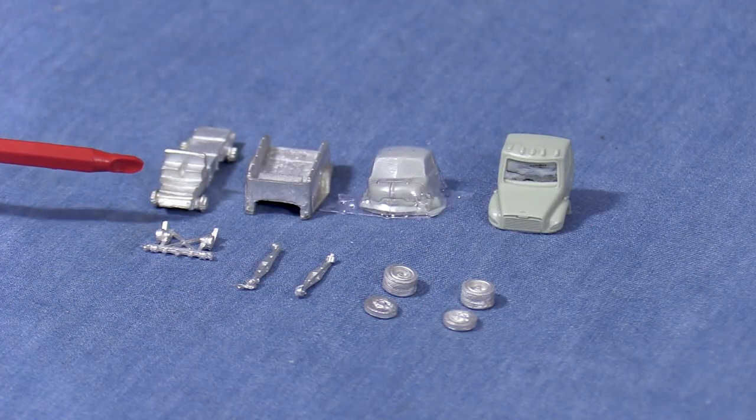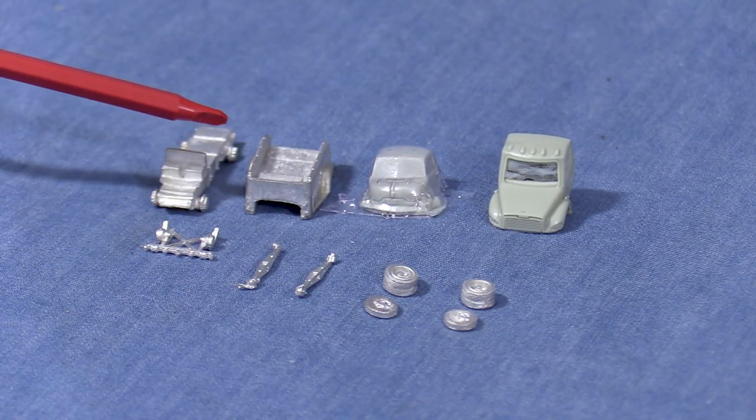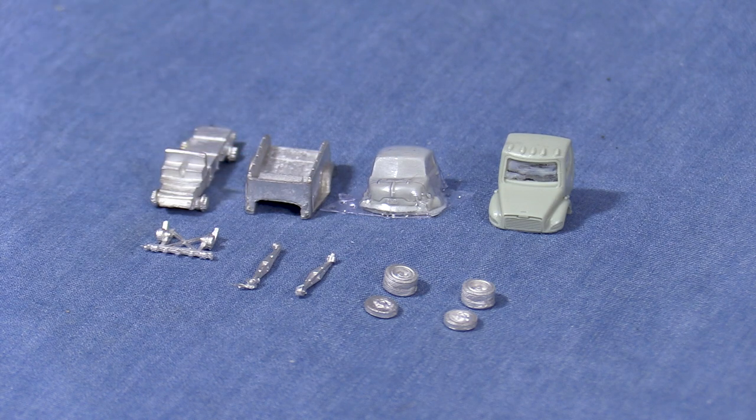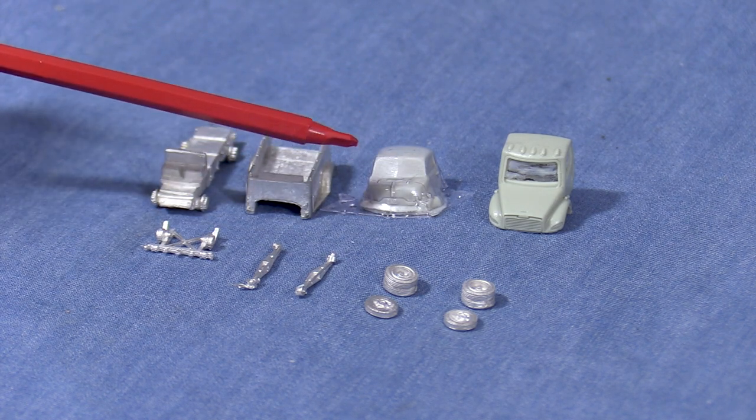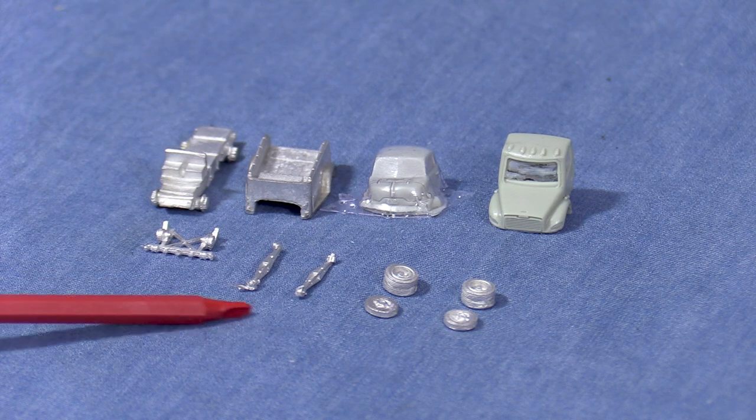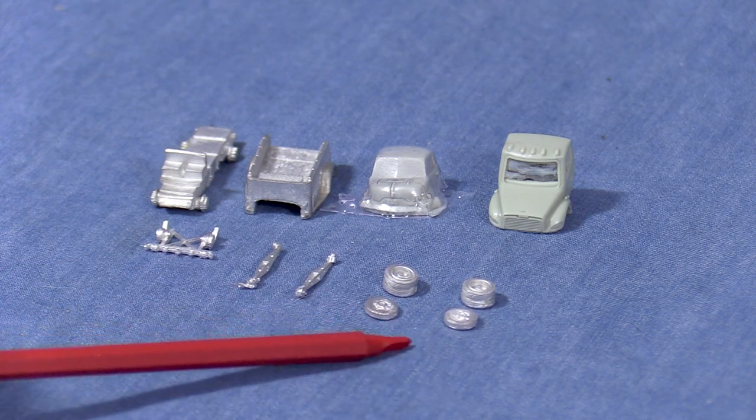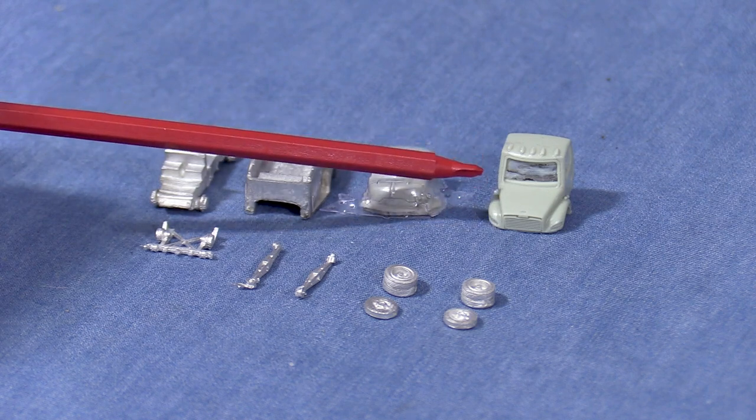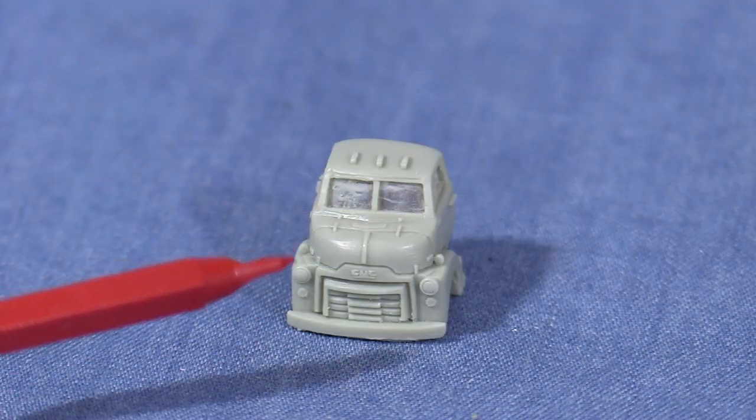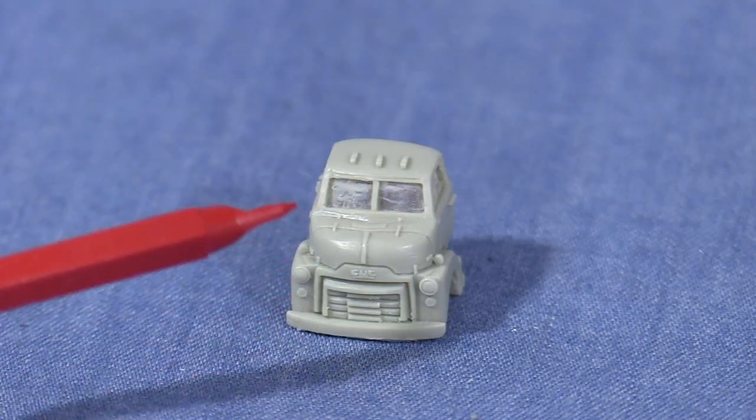The parts bag includes the white metal chassis, the rear of the truck, a resin mandrel with windshield material, parts for the wrecker boom, and wheels. The resin cab in my kit was not correct for this vehicle. I wrote to Showcase Miniatures and they sent me a replacement cab free of charge.